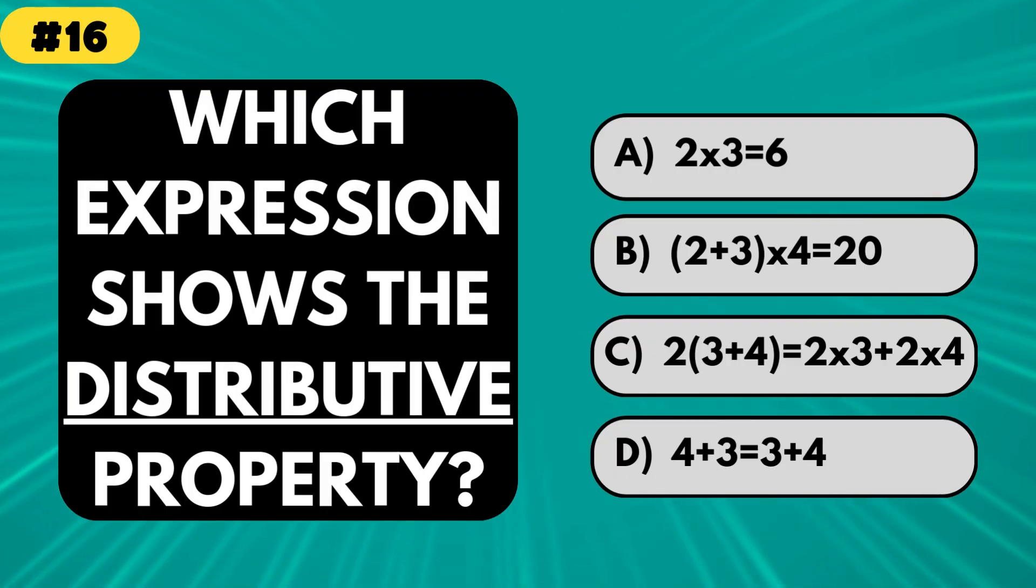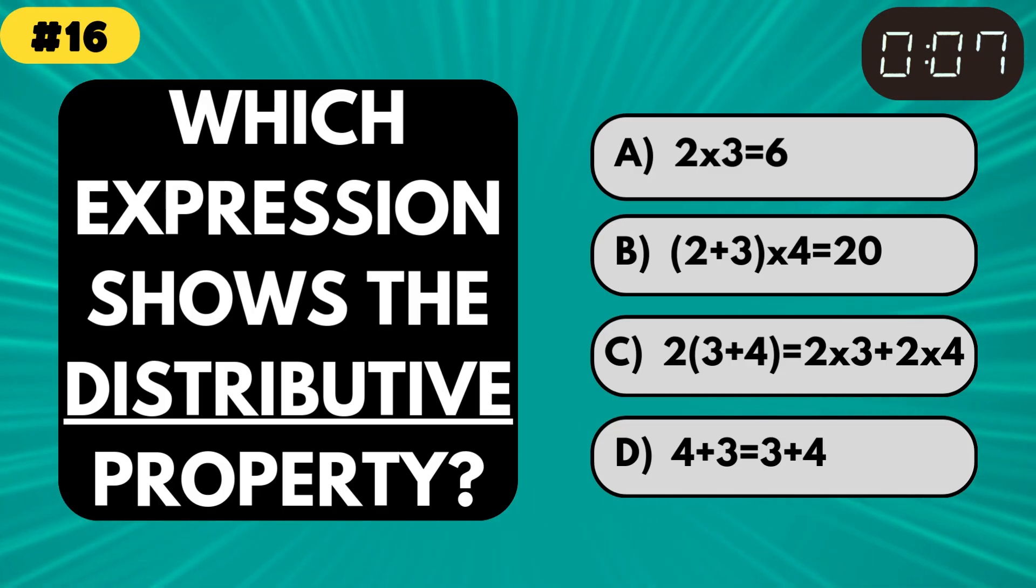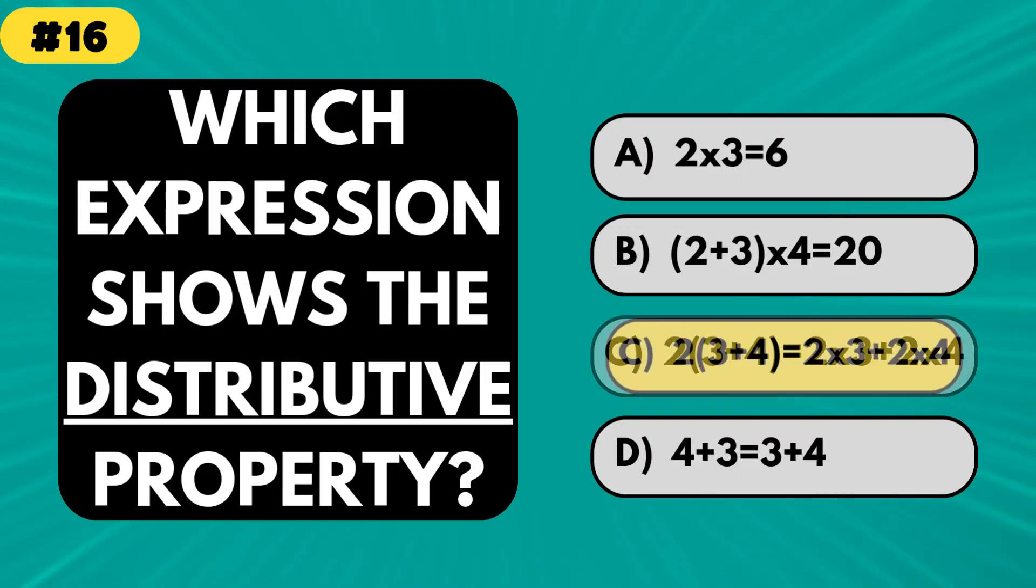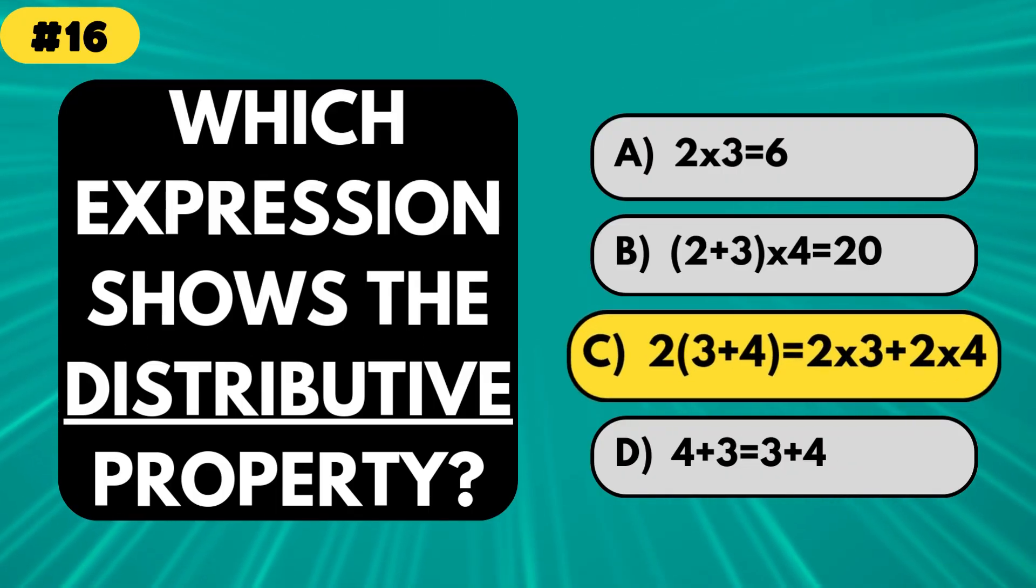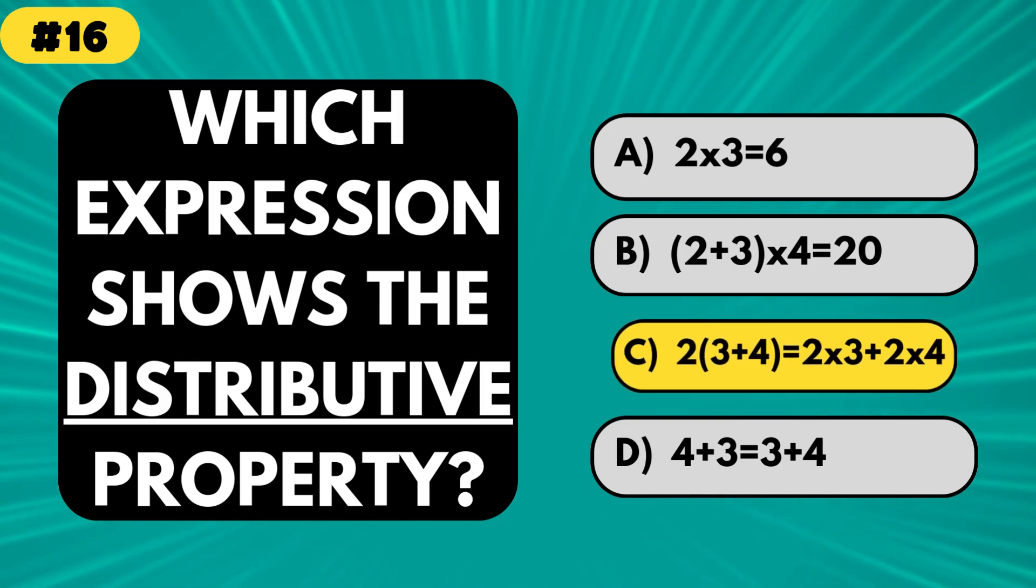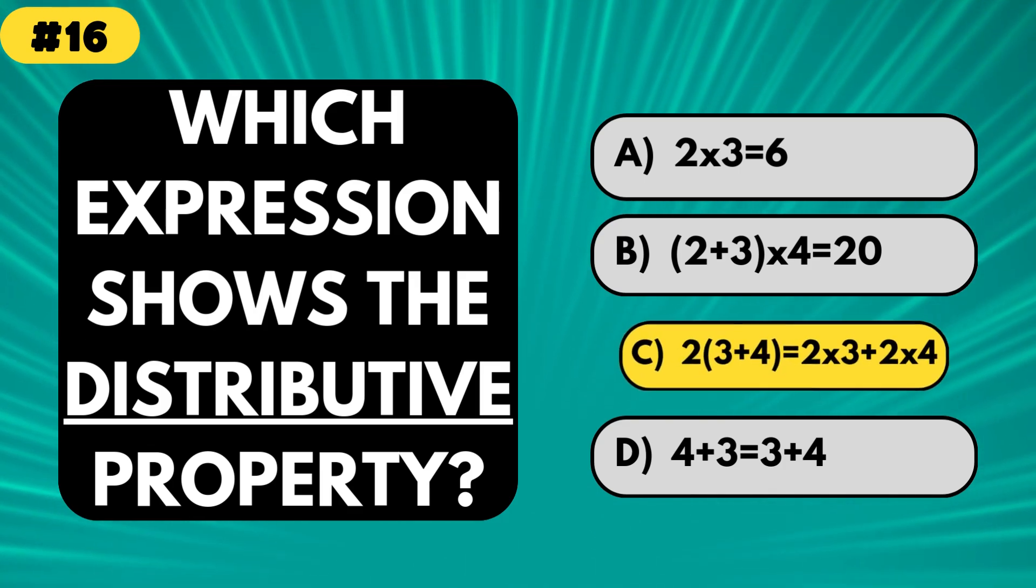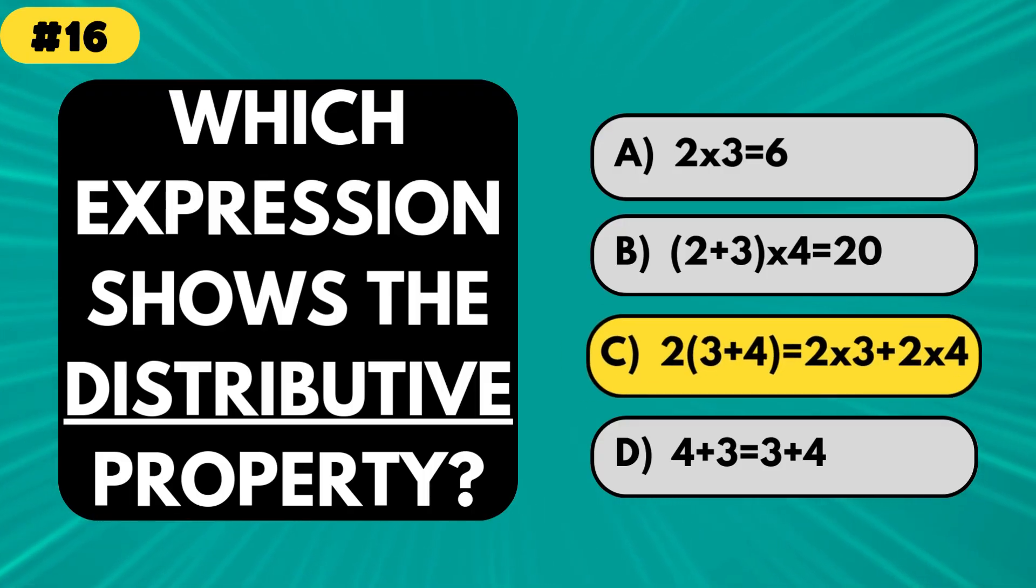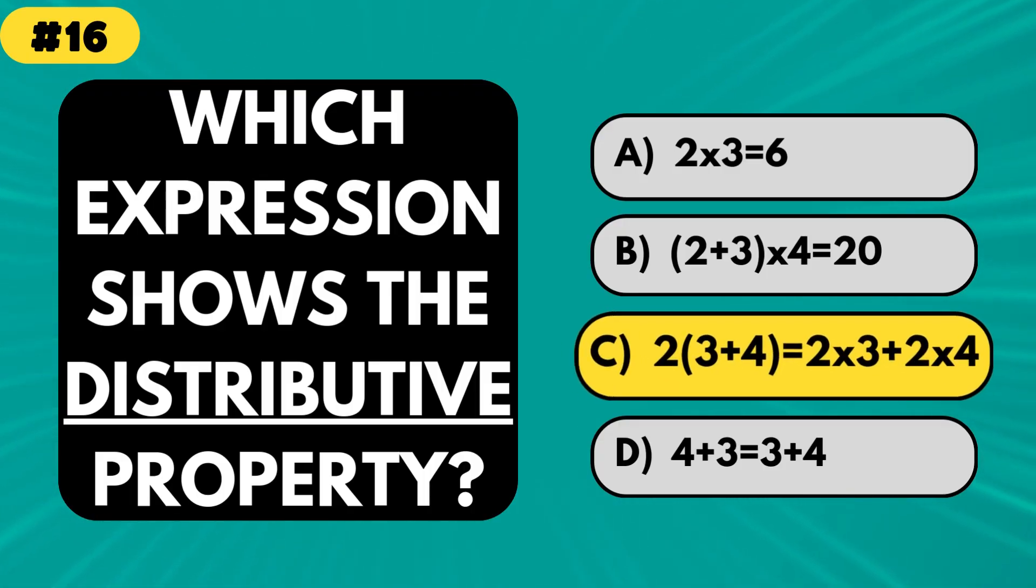Which of these shows the distributive property? The correct answer is C. The distributive property means distributive is a fundamental algebraic property used to simplify expressions and solve equations. It spreads it out, like butter on toast, but with numbers.